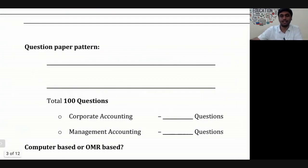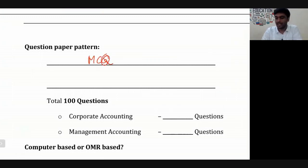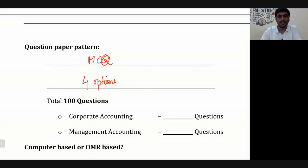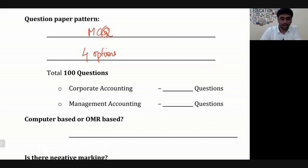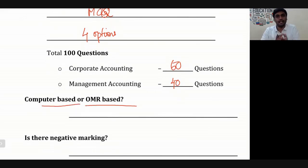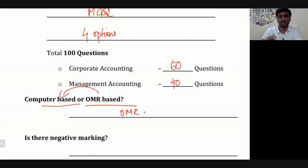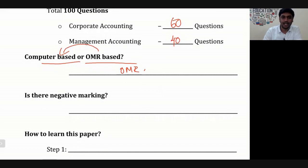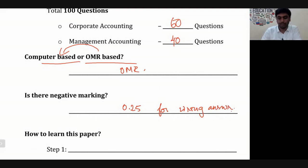What is the question paper pattern? This is basically an MCQ paper — multiple choice questions — where each question will have four options and the student will have to choose the right option. From corporate accounting, they get 60 questions, and from management accounting, they get 40 questions. It is an OMR-based paper till date, with 0.25 negative marking for every wrong answer.